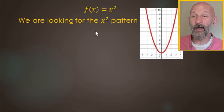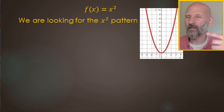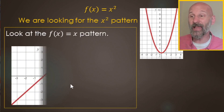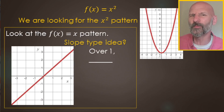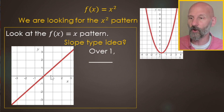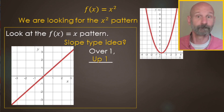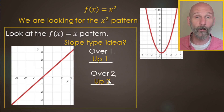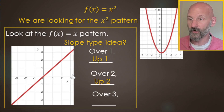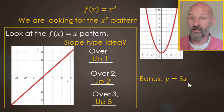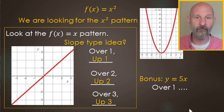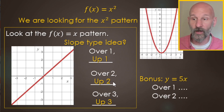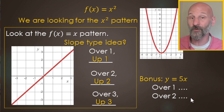Now let's look at the x-squared pattern on a graph. First, let's look at f(x) = x, a slope-type idea. Starting in the middle: over one, up one; over two, up two; over three, up three — the same amount each time. Quick bonus: with 5x instead of 1x, you go over one and up five — five times as steep. Go over two and up 10 instead of two. That's the idea we're building toward when we put a coefficient in front of x squared.